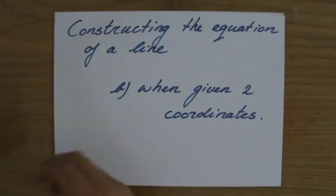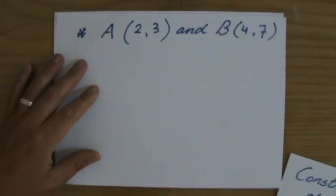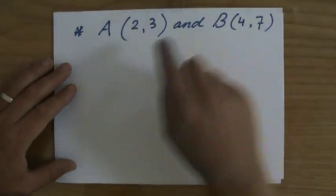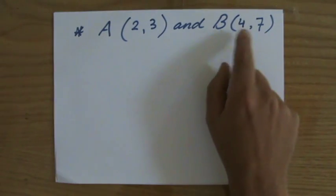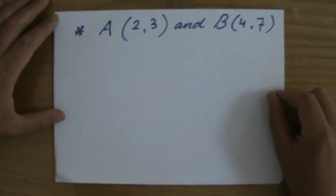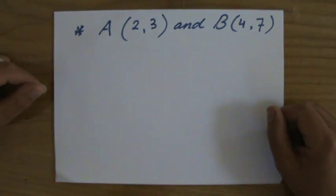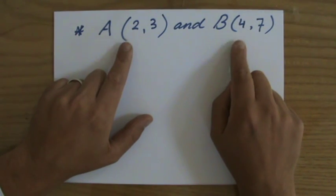For instance, they give me the coordinates of A and B, 2,3 for A and 4,7 for B, and they are asking me now what does the equation look like of the line going through these two points.